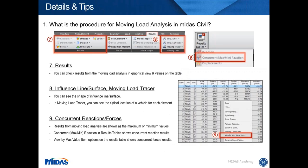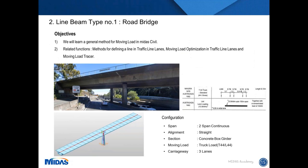We have looked into the procedure for moving load analysis in Midas Civil. Now we will look at some example models and see the use of several functions for moving load analysis. The first example model is a road bridge with a PSC box girder. The purpose of this project was to check the maximum reaction forces at the bottom of the pier. It has three traffic lanes, so the general method for traffic lane was used, and the moving load optimization function was used to check more cases.